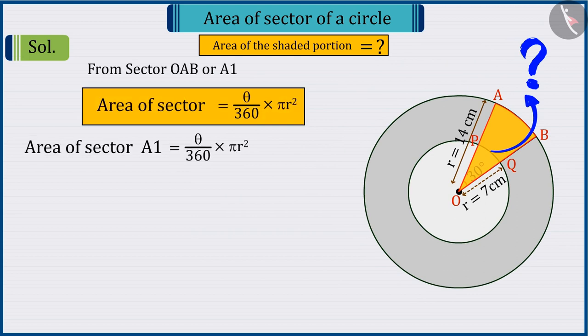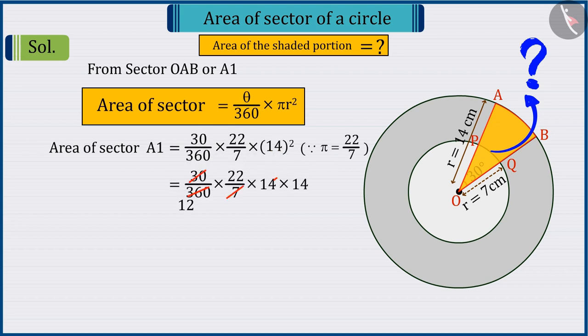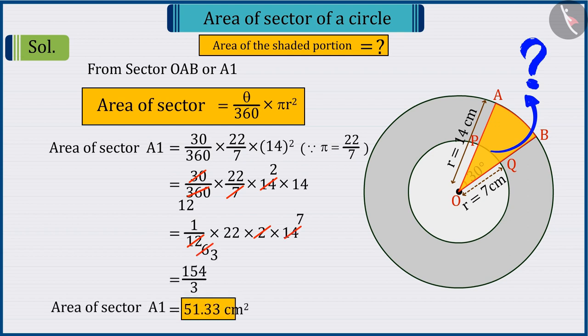Absolutely correct. Put the value of theta and R in the area formula of the sector. On solving, the value of A1 is 51.33 square centimetres.